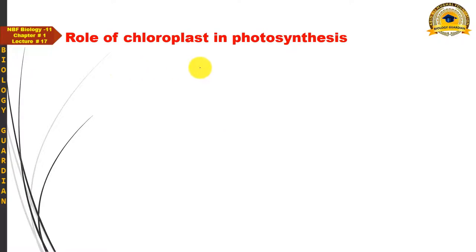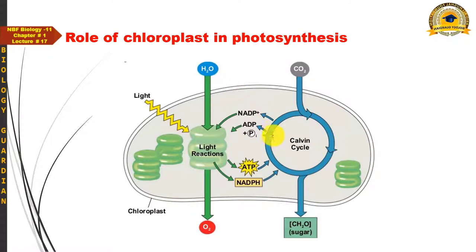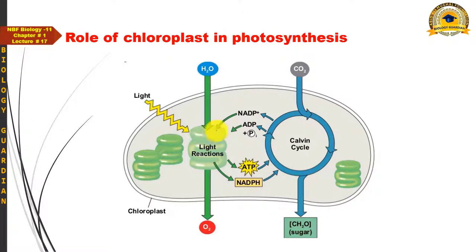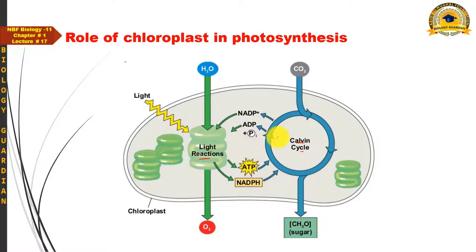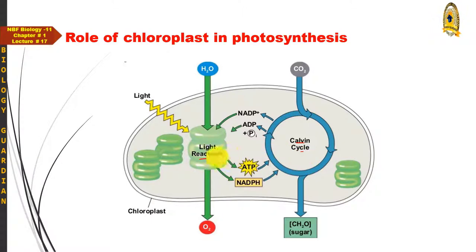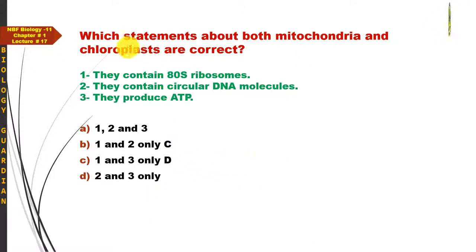The chloroplast's function is photosynthesis — the food manufacturing process. Photosynthesis has two phases: the light reaction, in which light is absorbed by pigments in the thylakoid membranes of the grana region, and the dark reaction, a metabolic pathway that occurs in the stroma region. So grana are associated with the light reaction and stroma with the dark reaction.